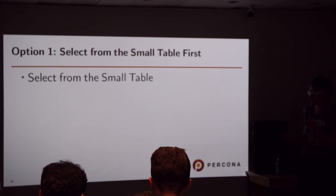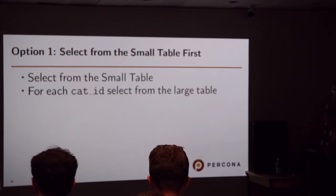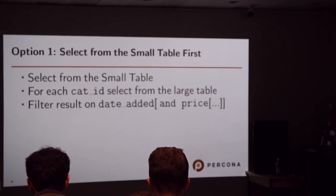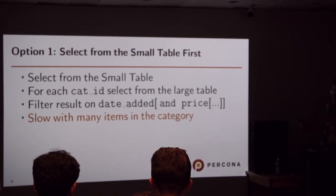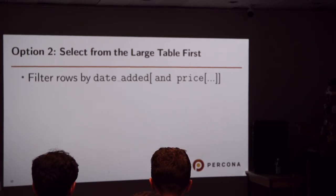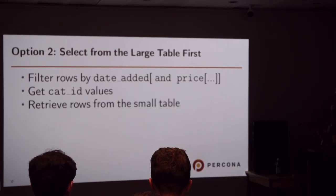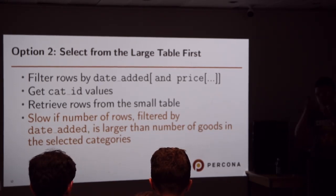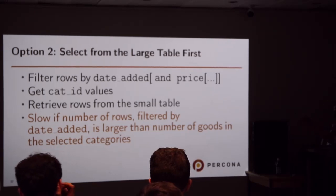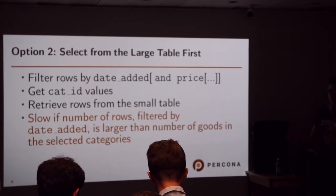How can we resolve this query? Option one: select from the small table first, then for each category ID select from the large table and filter results. This works but will be very slow if we have many items per category. Option two: filter rows by date or condition, get category ID values, and retrieve all rows from the small table. But this will be slow if the small table isn't really small, or if the number of categories is much larger than the number of goods in the selection.